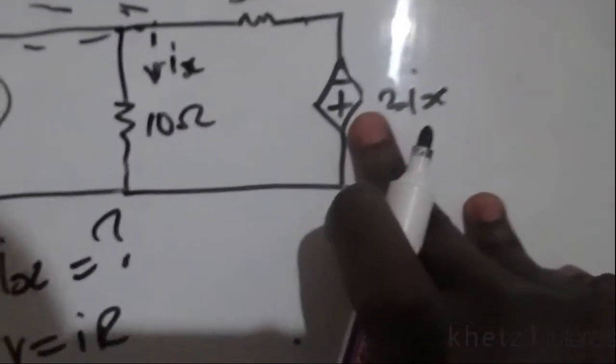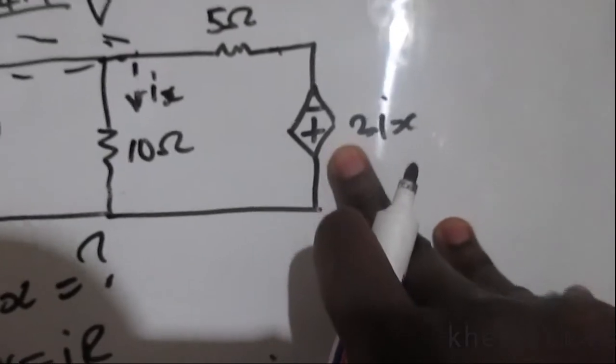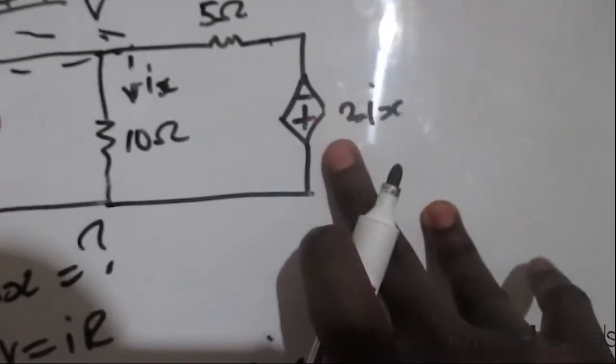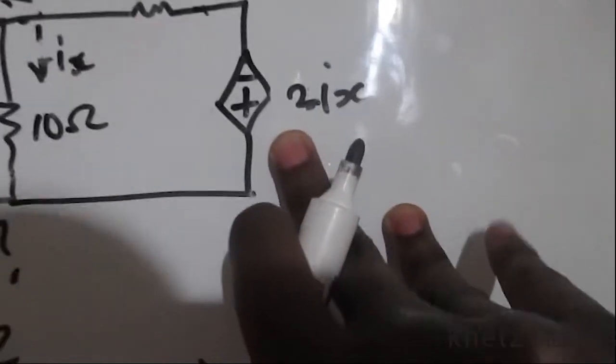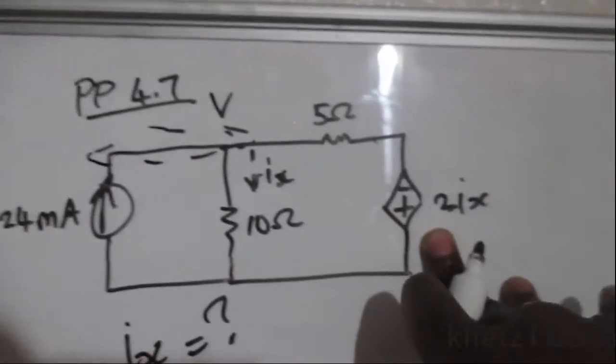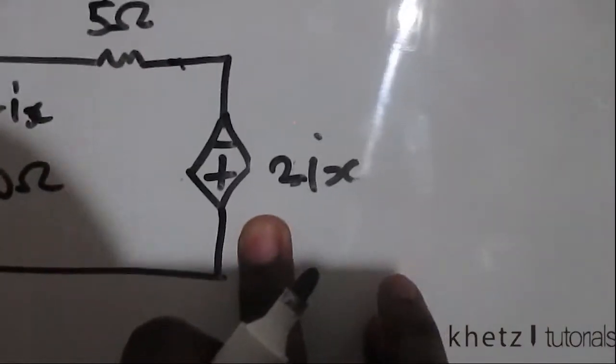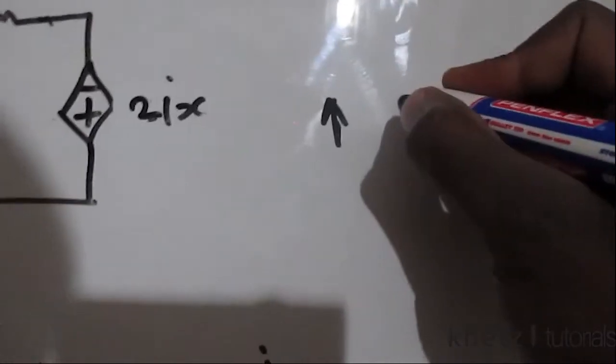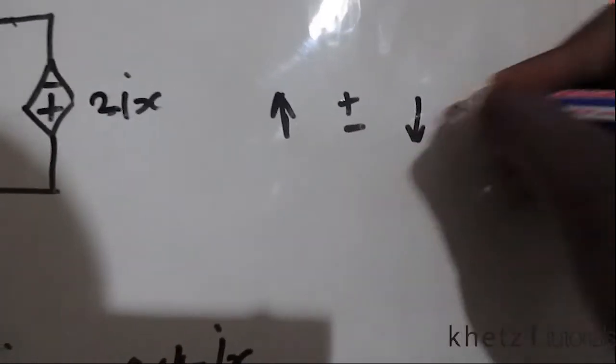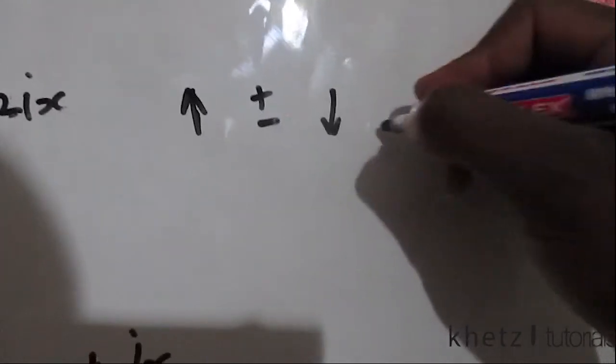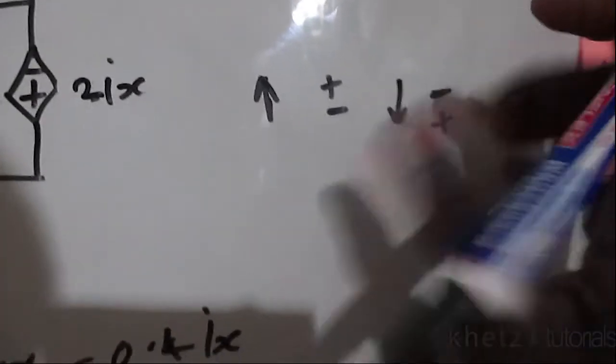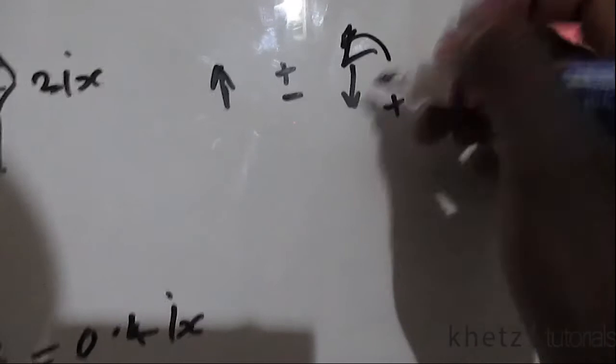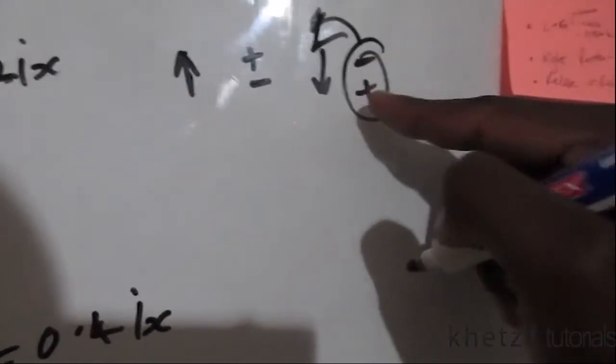We have ix and a resistor which is in parallel with this new current source which we just calculated. But if you look at the polarity, as I said in the previous video when I was covering practice problem 4.6, if you have a current source which is pointing up then your positive is going to be at the top.